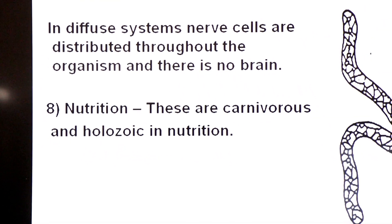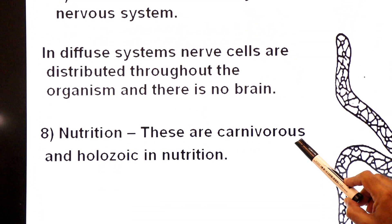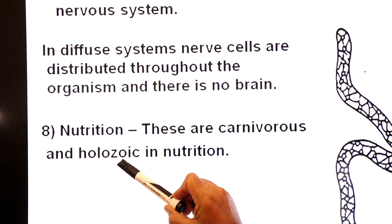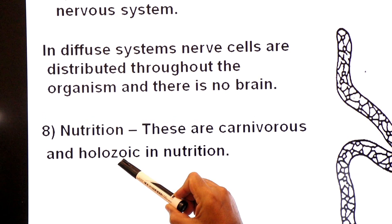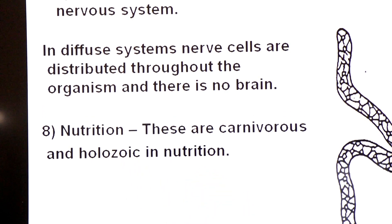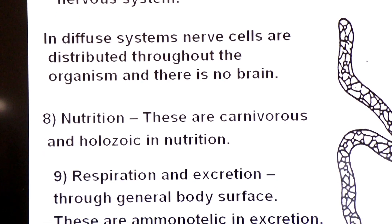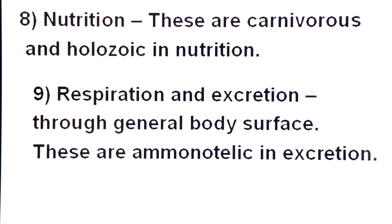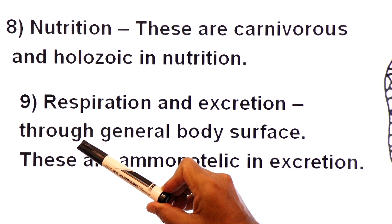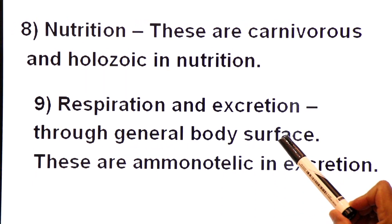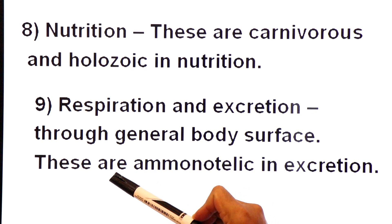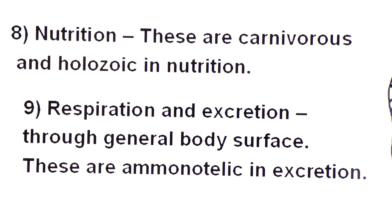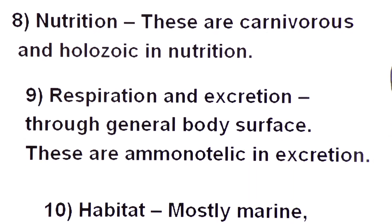Regarding nutrition, cnidarians are carnivorous — meat eaters — and their nutrition is holozoic, meaning complete animal-like ingestive nutrition. For respiration and excretion in Cnidaria, both processes take place through the general body surface. They are ammonotelic in excretion, meaning they excrete ammonia as their nitrogenous waste product.